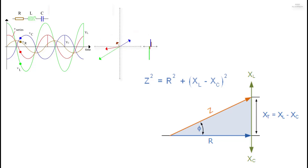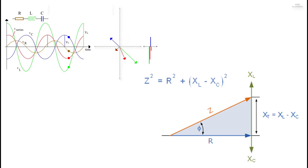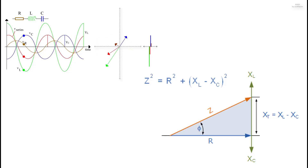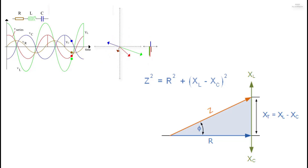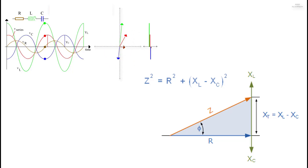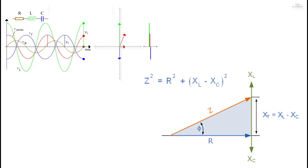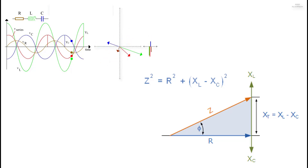The impedance Z of a series RLC circuit depends upon the angular frequency ω, as do XL and XC. If the capacitive reactance is greater than the inductive reactance (XC > XL) then the overall circuit reactance is capacitive, giving a leading phase angle. If the inductive reactance is greater (XL > XC) then the overall reactance is inductive, giving a lagging phase angle. If XL equals XC, the angular frequency at which this occurs is called the resonant frequency, which we will look at in more detail in another tutorial.